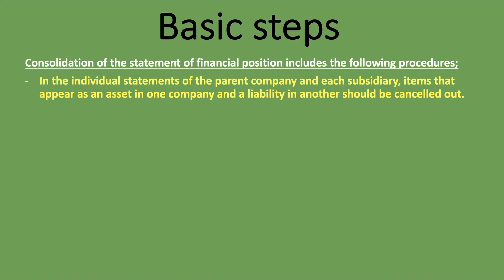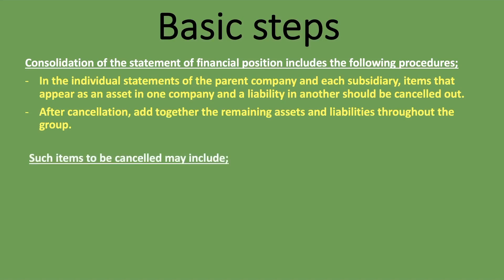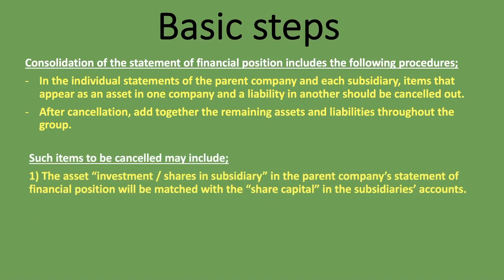So if it's recorded as an asset in one company and a liability in another, then you need to cancel them out. After you've done the cancellation, add together the remaining assets and liabilities throughout the group. However many companies you have in the group, such items to be cancelled may include — and these are the very common items — the asset investment or shares in subsidiary in the parent company's statement of financial position will be matched with the share capital in the subsidiary's accounts.